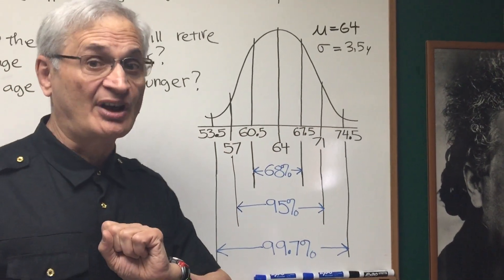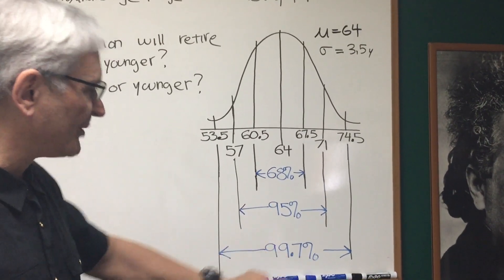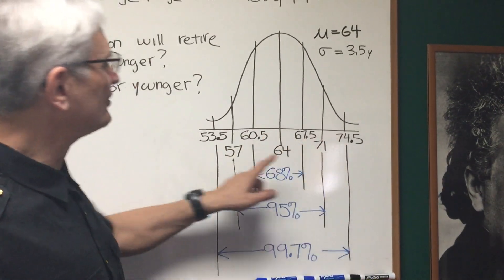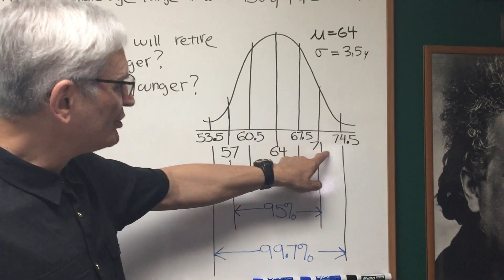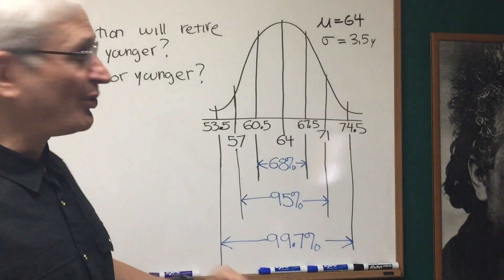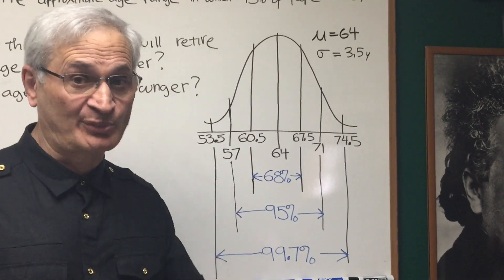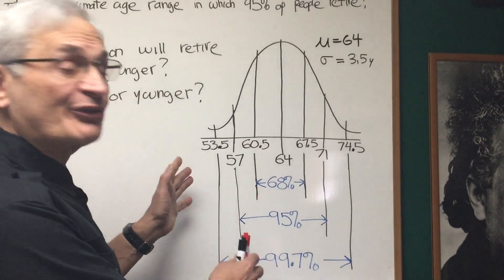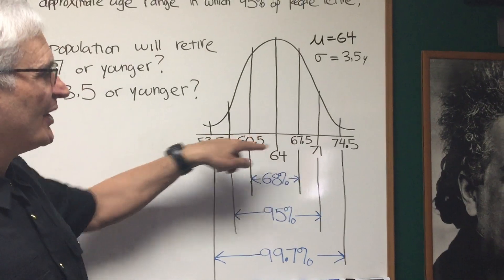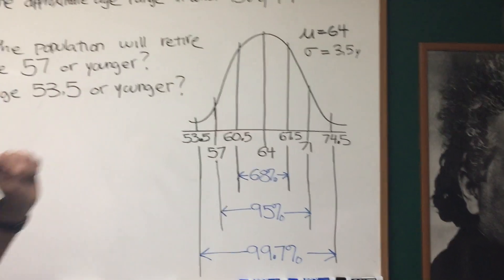And finally, the 99.7% means that that's the percentage of the population that will fall within three standard deviations of the mean. So how do we get those extreme values? We take 64 of the mean, add 1, 2, 3 multiples of 3.5, and subtract 3 multiples of 3.5, and that's how we get those values that define the 99.7% portion of the standard normal curve. This is true for all standard normal distributions, not the numbers themselves, but the distribution and the number of standard deviations from the mean is standard, is the same for all standard normal distributions.